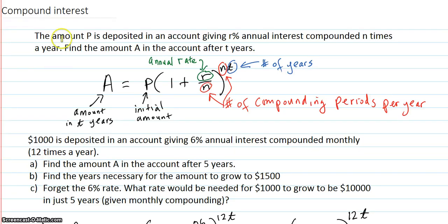Compound interest. The amount P is deposited in an account giving R percent annual interest, but it's compounded N times per year. Find the amount A in the account after T years.